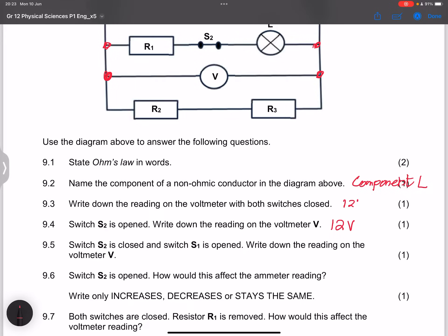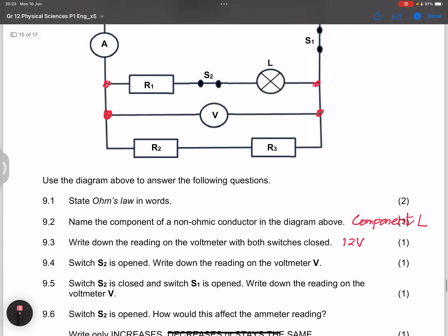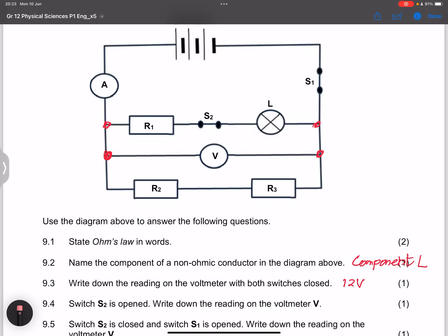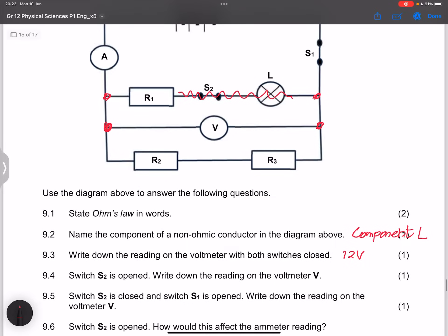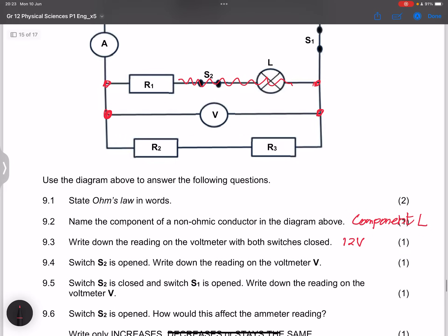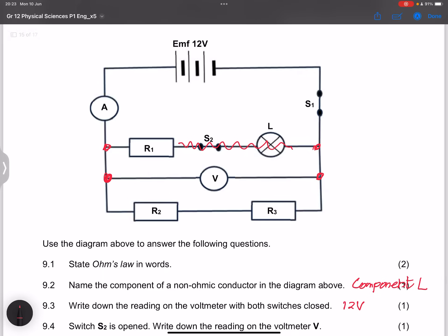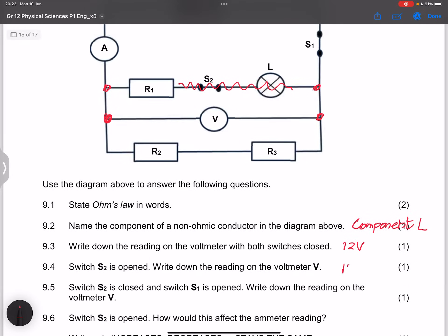Now they say switch S2 is open. The moment we open switch S2, what it means is that those two resistors actually are not connected to the circuit. There's no current flowing through them. They say write down the reading on the voltmeter. Once again, even with switch S2 open, the reading on the voltmeter there would still be that 12 volts again.